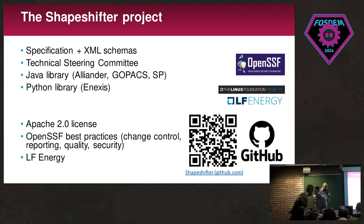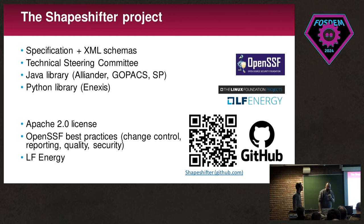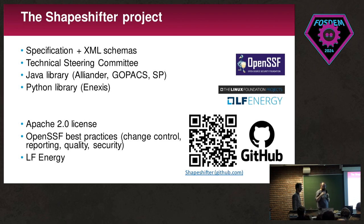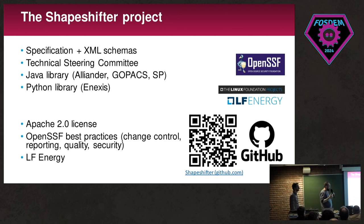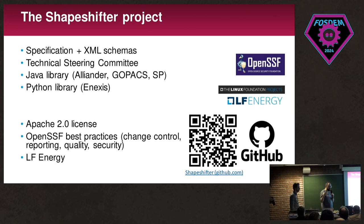The Shapeshifter project consists of a specification published on GitHub — you can scan the QR code — alongside XML schemas defined with it. We are organized using a Technical Steering Committee with members from UK DSOs and Dutch DSOs. There are two implementations already: a Java library in use by Alliander and GoPax, which is the congestion platform in the Netherlands, and a Python implementation used by another DSO. Everything is published under the Apache 2 license. We are currently focusing on improving processes and quality control to meet OpenSSF best practices, and we are part of the LF Energy initiative.